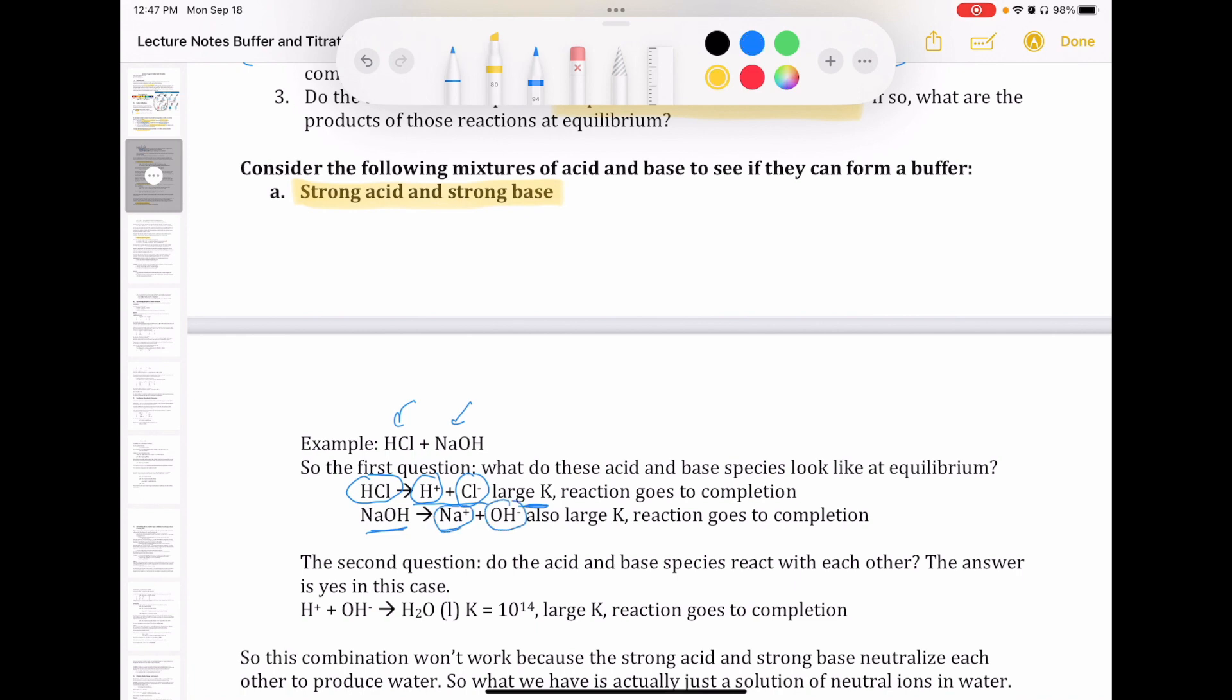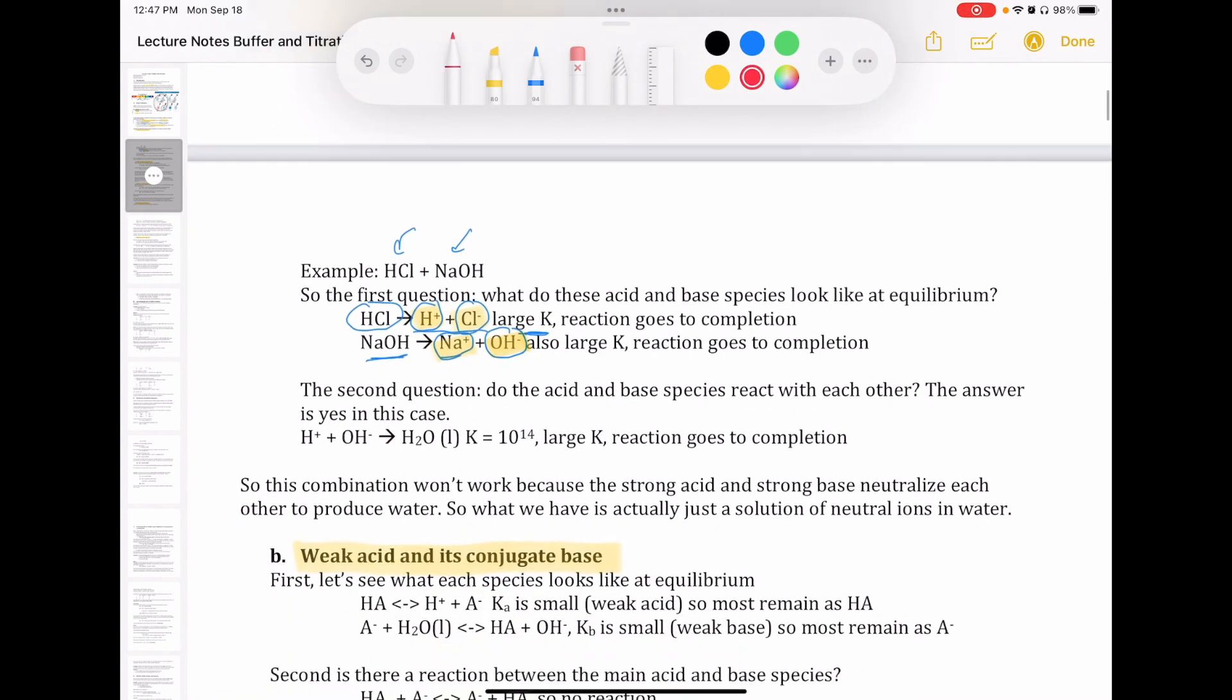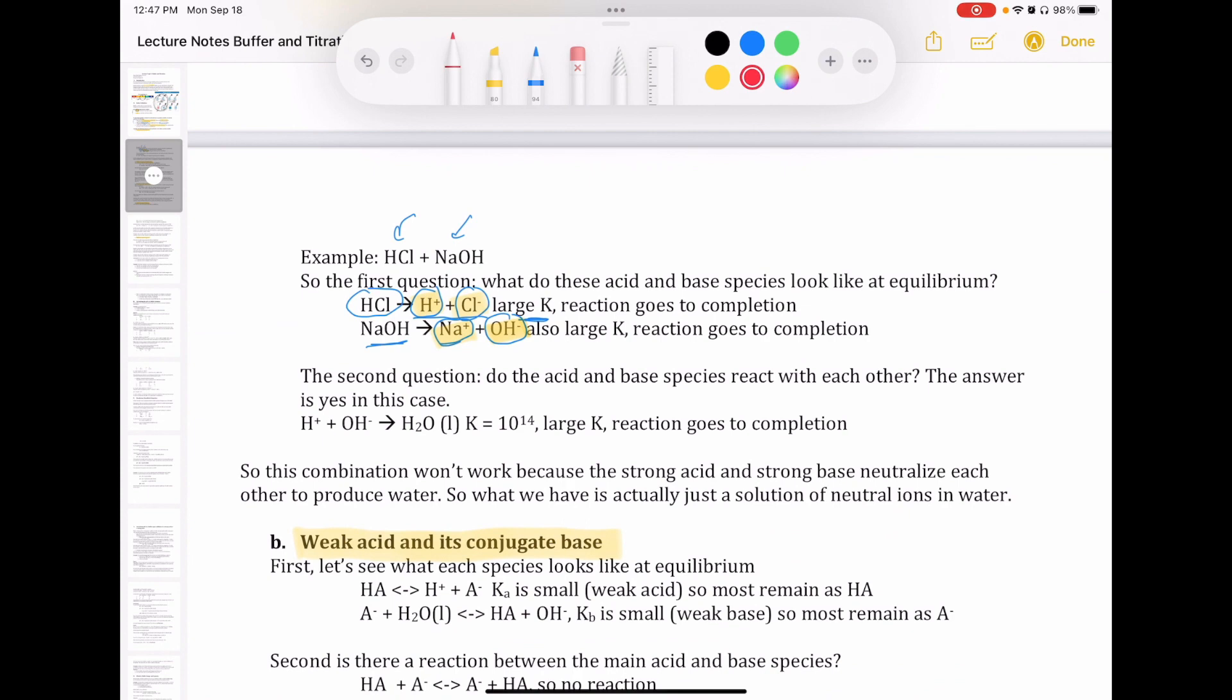So essentially, what I actually have in my solution, in my flask or my beaker, it's not HCl or NaOH, but what I have is H+, Cl-, Na+, and OH-. And then the next thing I need to ask myself is, if I have those four ions that I just highlighted in yellow, which of these will actually react with each other?